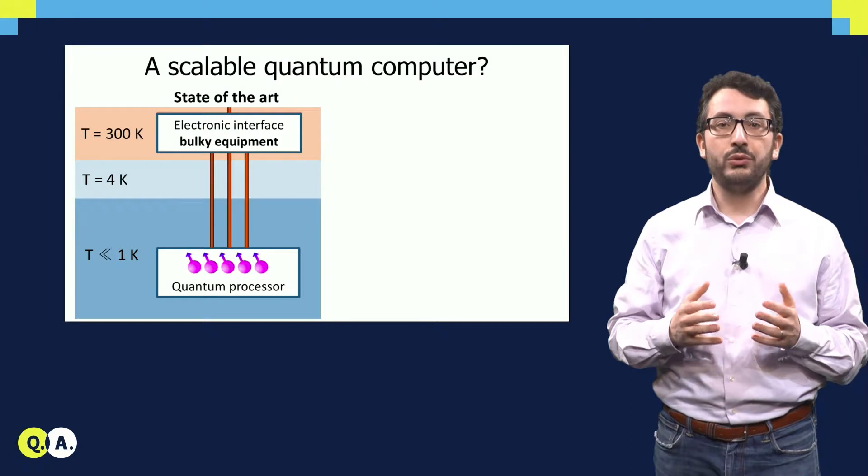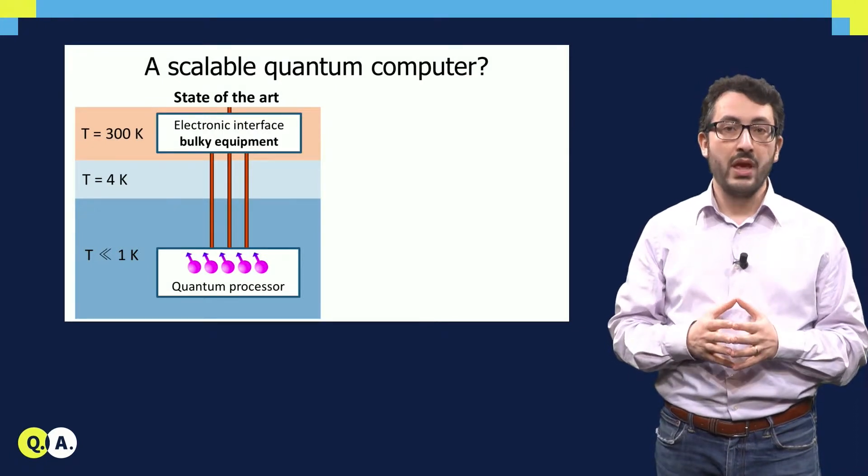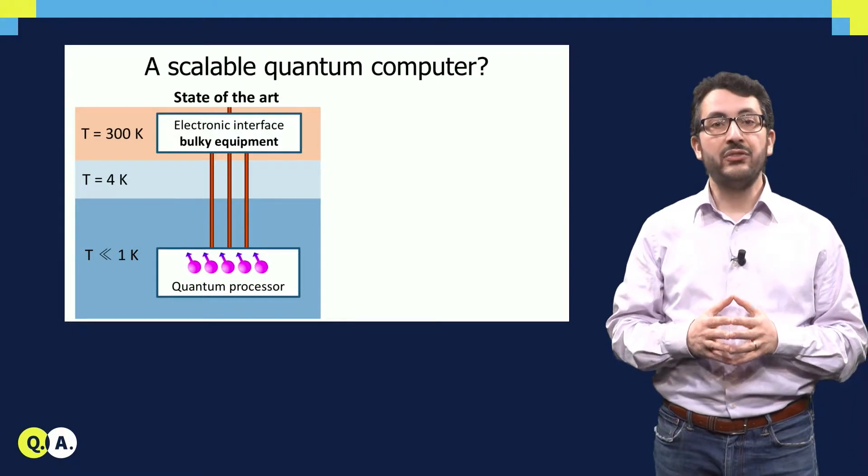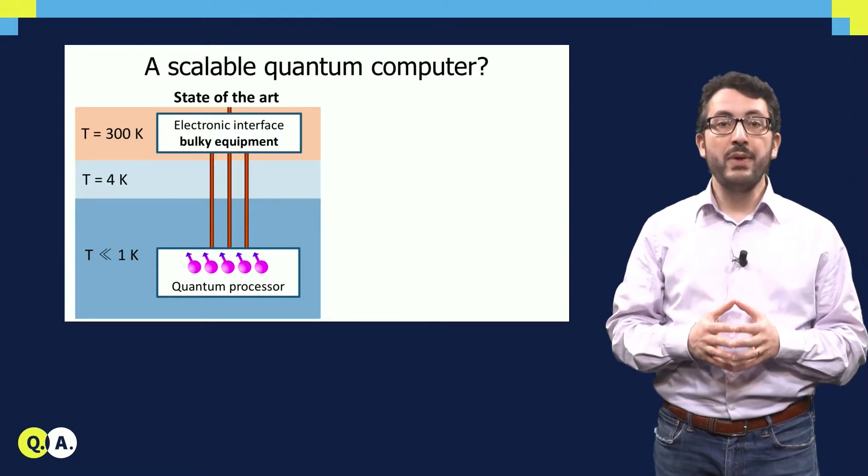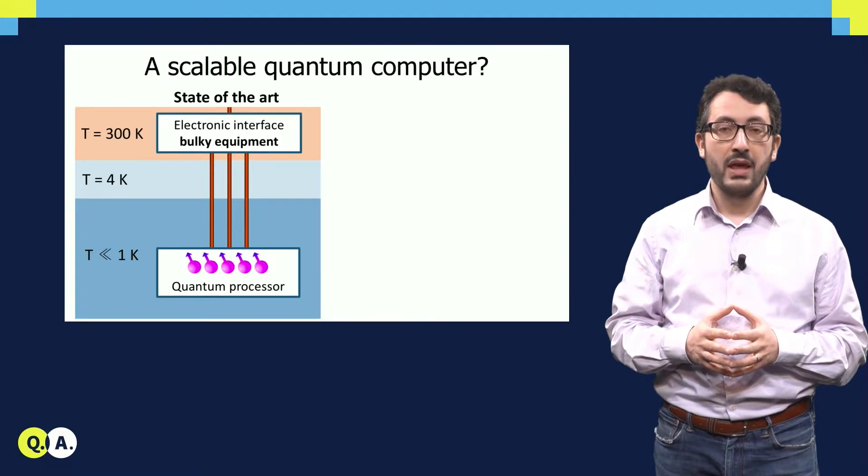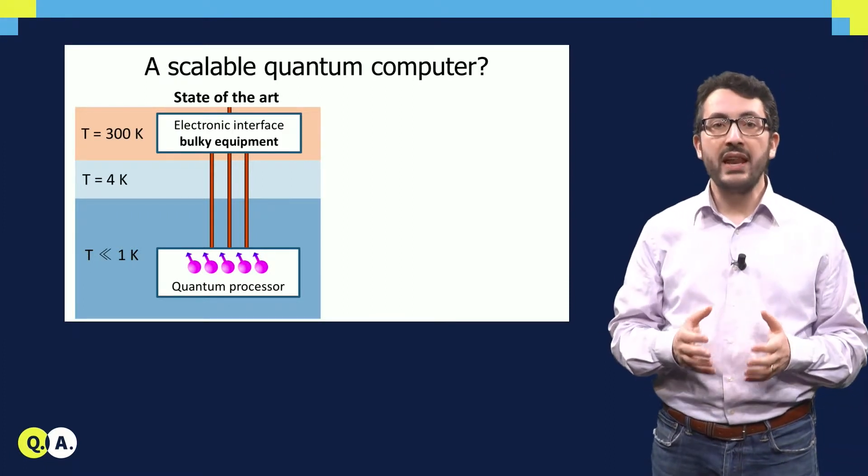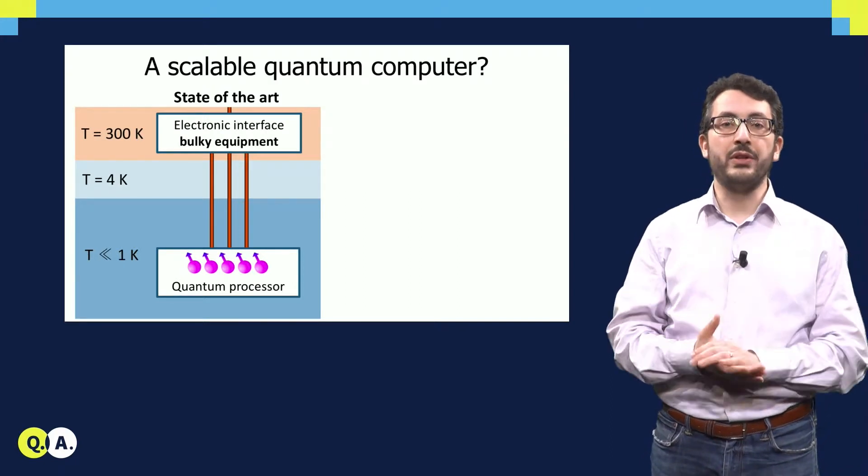A quantum computer today looks like this. You have the quantum processor at very low temperature and the electronic interface at room temperature, composed by very bulky equipment. The question we want to ask ourselves is, can we scale up such a system to a very large number of qubits?